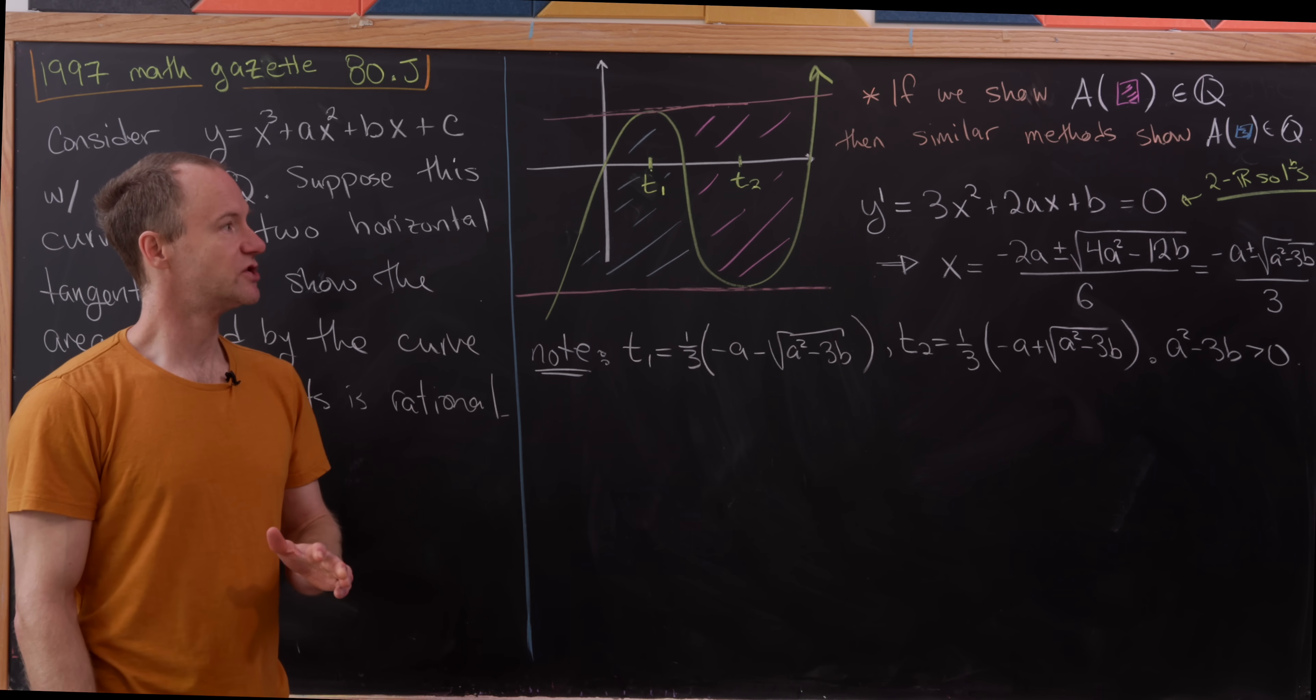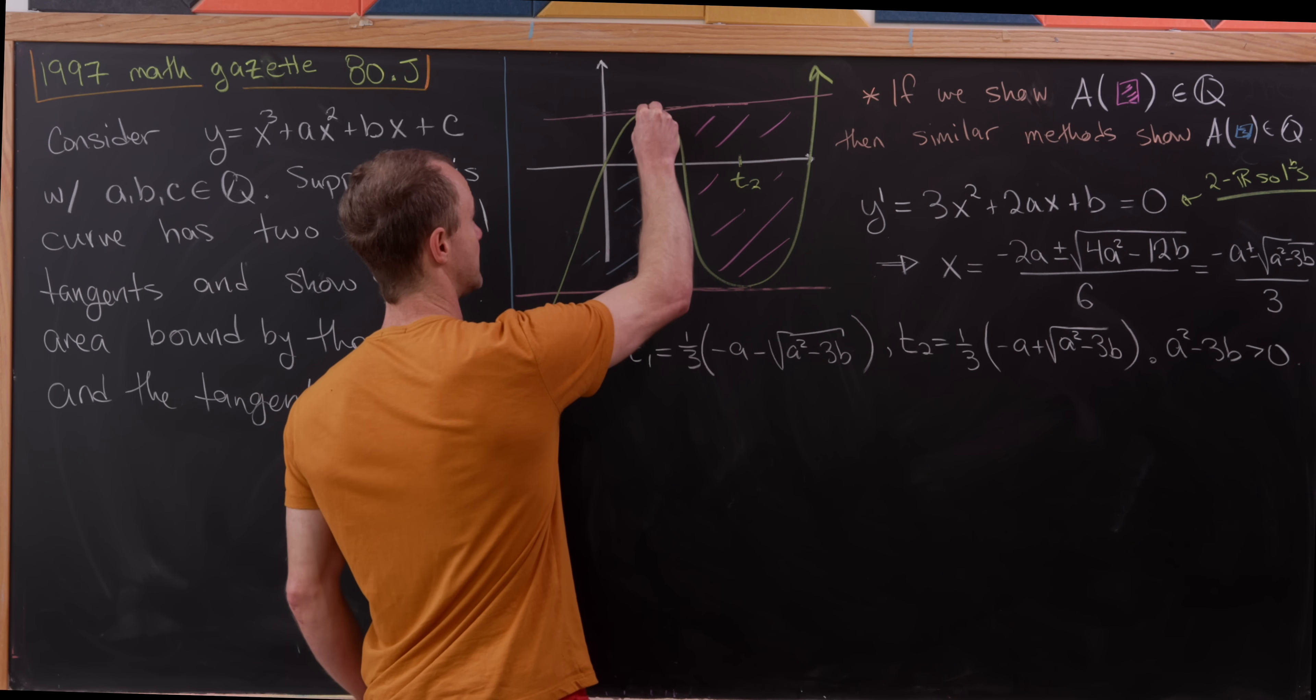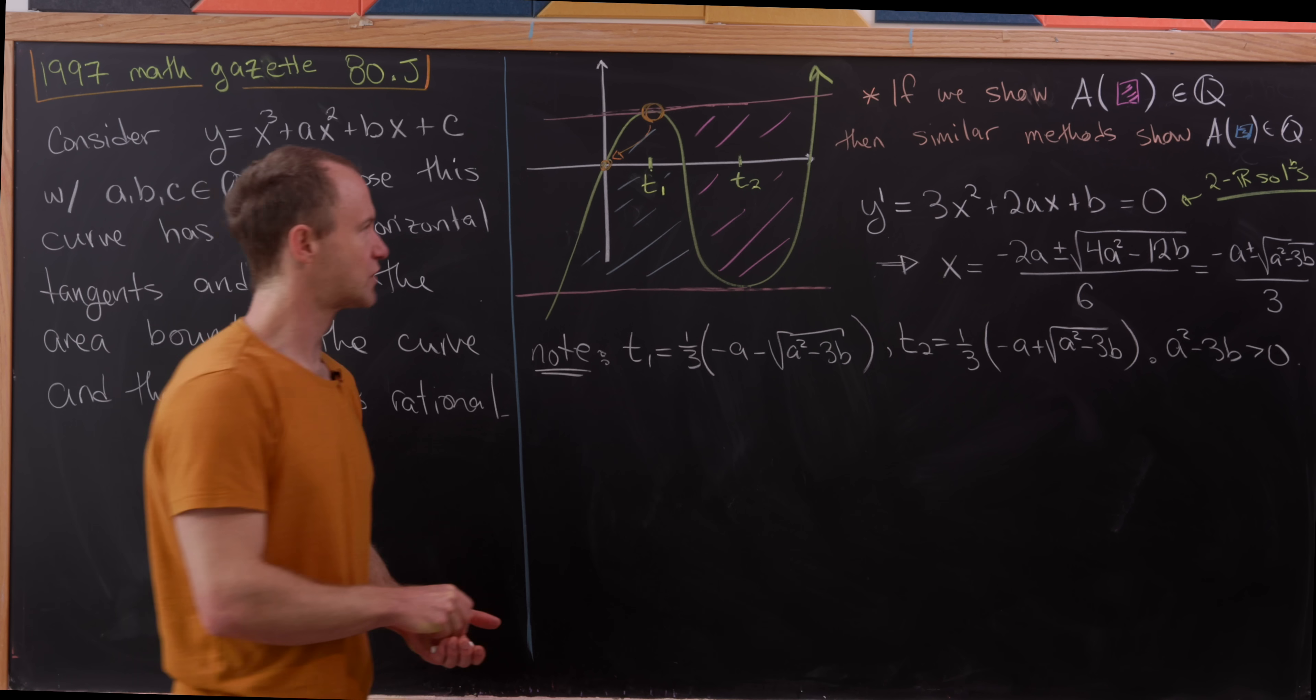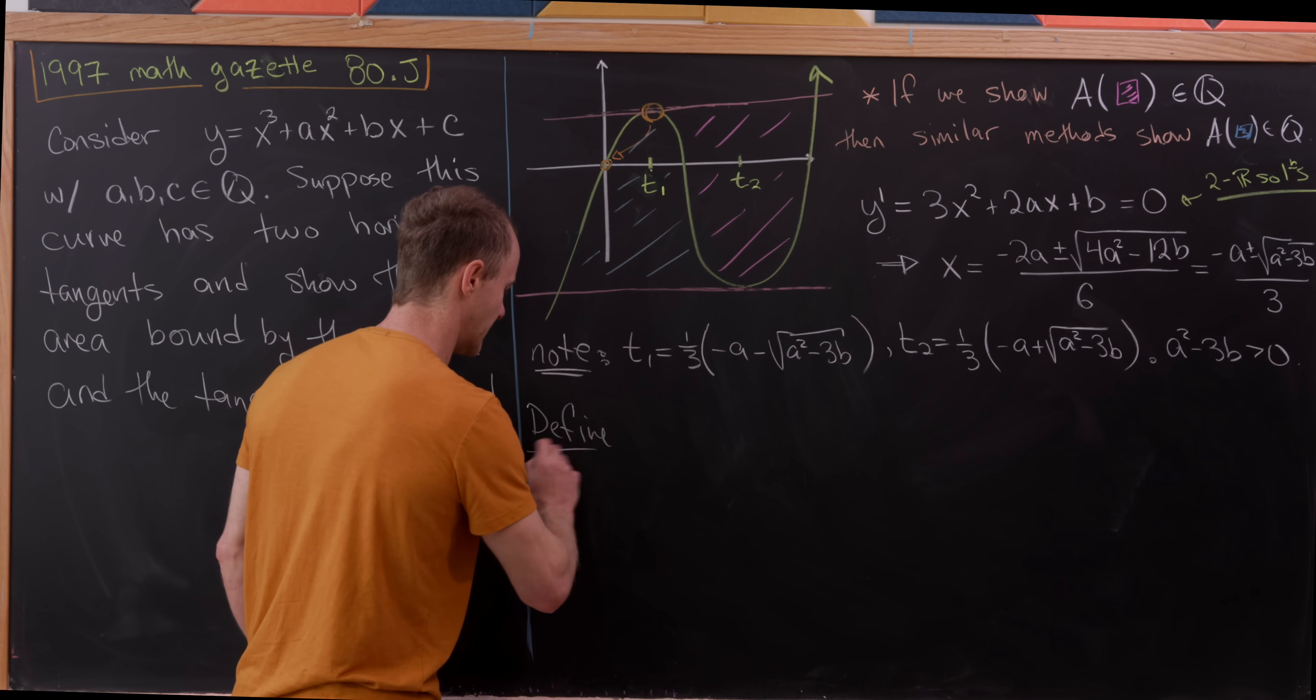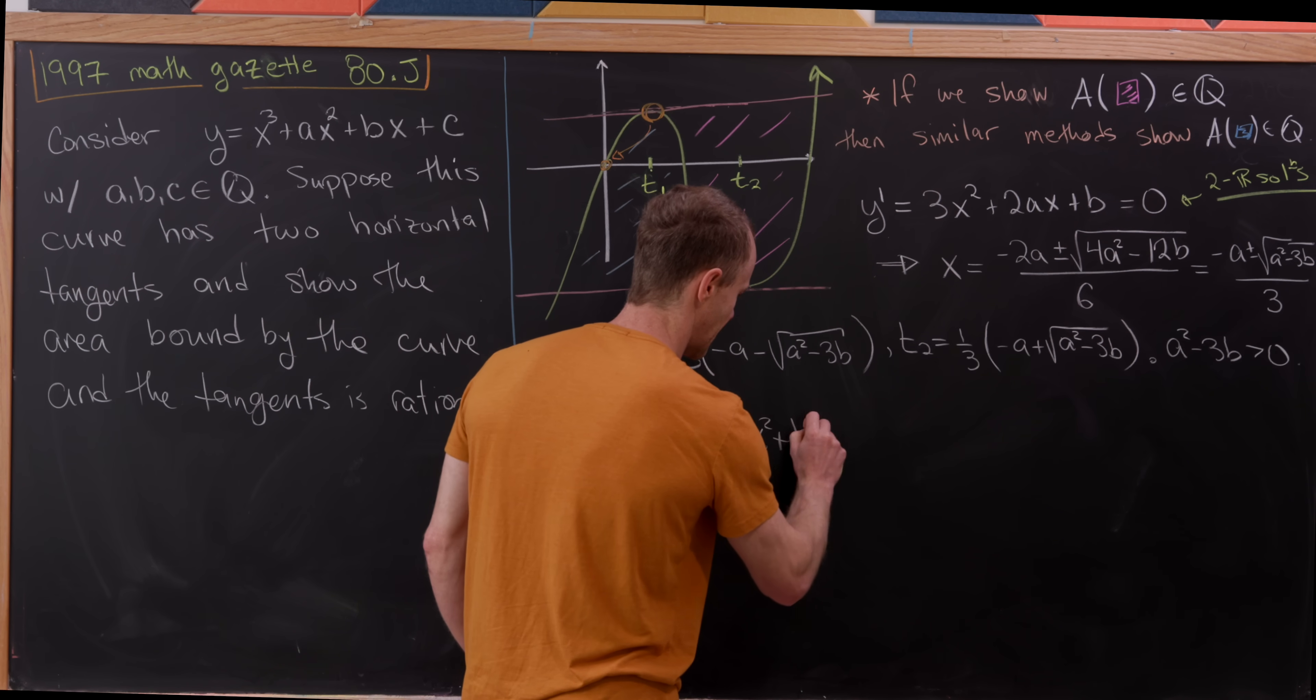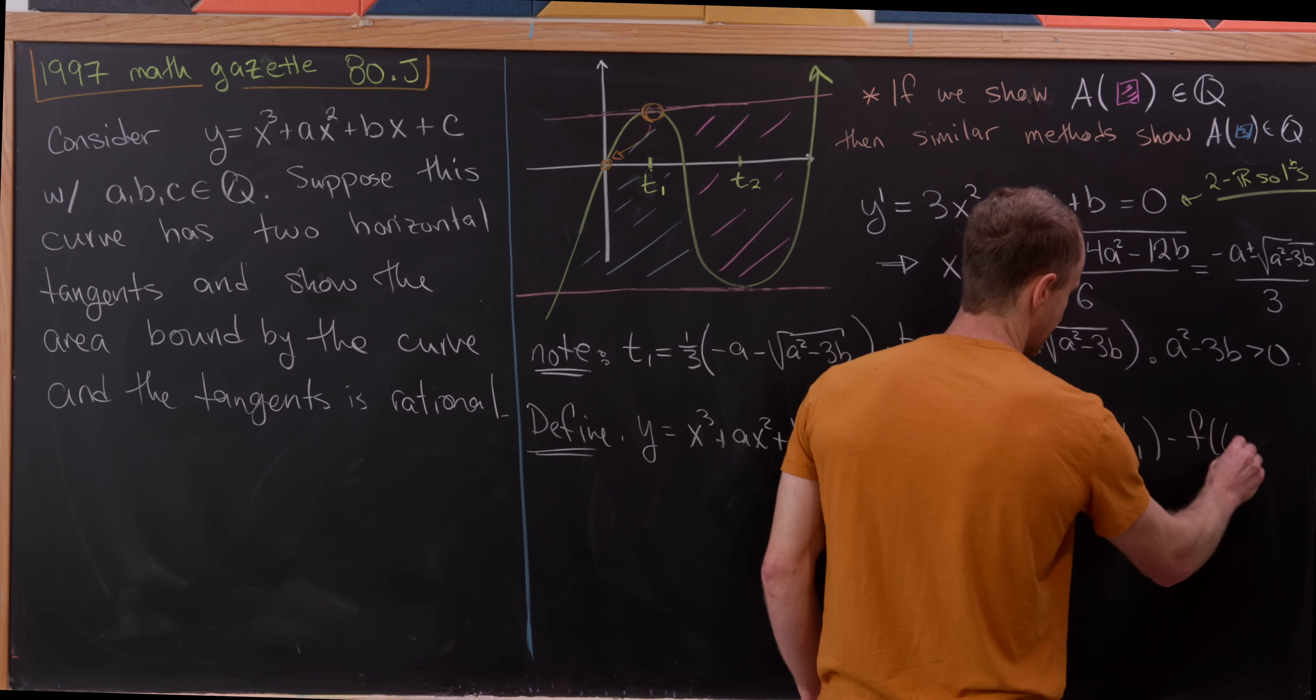So now what we're going to do is do a shift on our original graph. And in fact, the shift that we'll do will take this point right here, our maybe leftmost horizontal tangent, in other words, the local maximum, and we're going to shift it down here to the origin. So we'll redraw this picture so we have a feel for what it looks like, but let's maybe set up the new functions for this. So if we define y to be our original polynomial, so we've got x cubed plus ax squared plus bx plus c, then what we want to do is set g of x equal to f of x plus t1 minus f of t1.